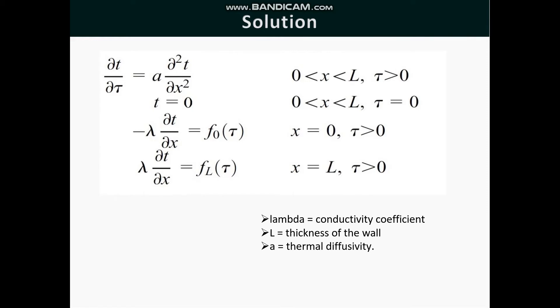We can see the following conditions: ∂T/∂τ = α ∂²T/∂x², where T is the temperature and τ is the time. This condition is for x ranging from 0 to L and τ > 0. T = 0 for x ranging from 0 to L for τ = 0. -λ ∂T/∂x = F0(τ) for x = 0 for all τ > 0. And λ ∂T/∂x = FL(τ) for x = L for all τ > 0.